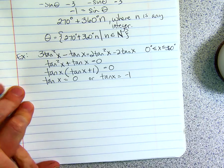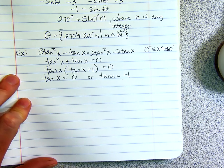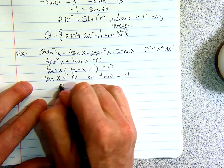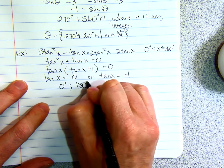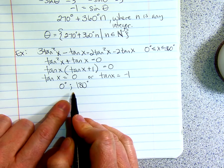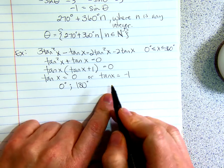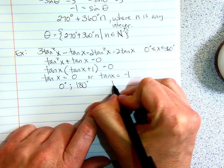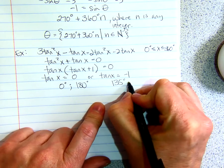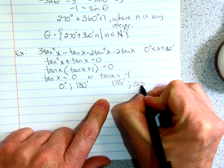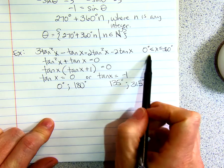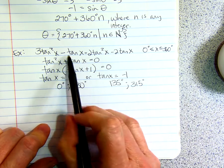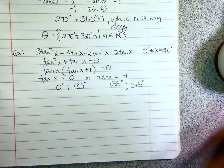So we have cos over sine. So it's 0 degrees or 180 degrees is when the tangent is 0. And then tangent's negative 1 at 135 degrees and 315 degrees. And those are all the times that this will be between 0 and 360 when this will be true. That's the end of that lesson.